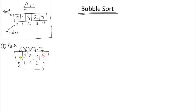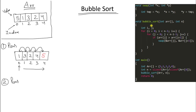So 5 is already sorted after the first pass. Now let's look at the code alongside the explanation to visualize it better. This is the bubble sort function called from main. It looks similar to selection sort but the mechanism is different. There are two for loops and an if statement for swapping. We check if array[j] is greater than array[j+1], and if so, we swap them.